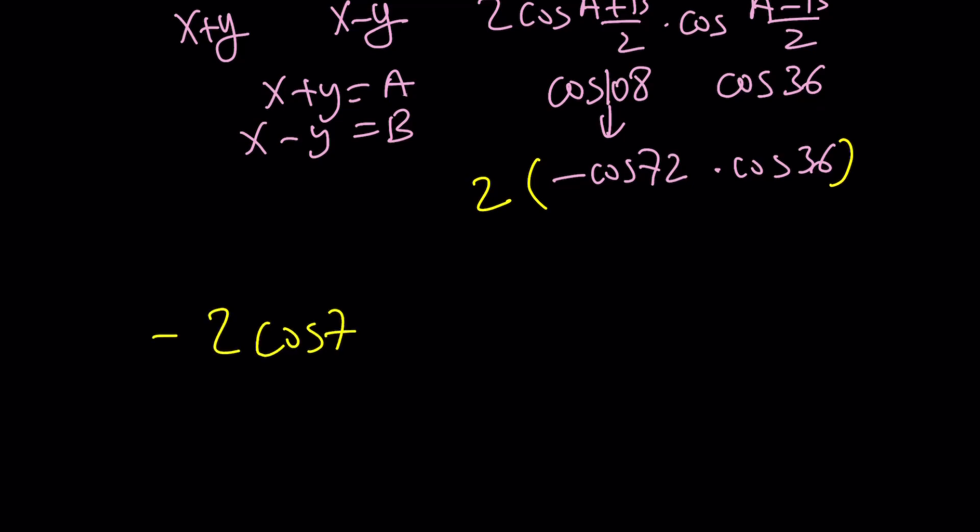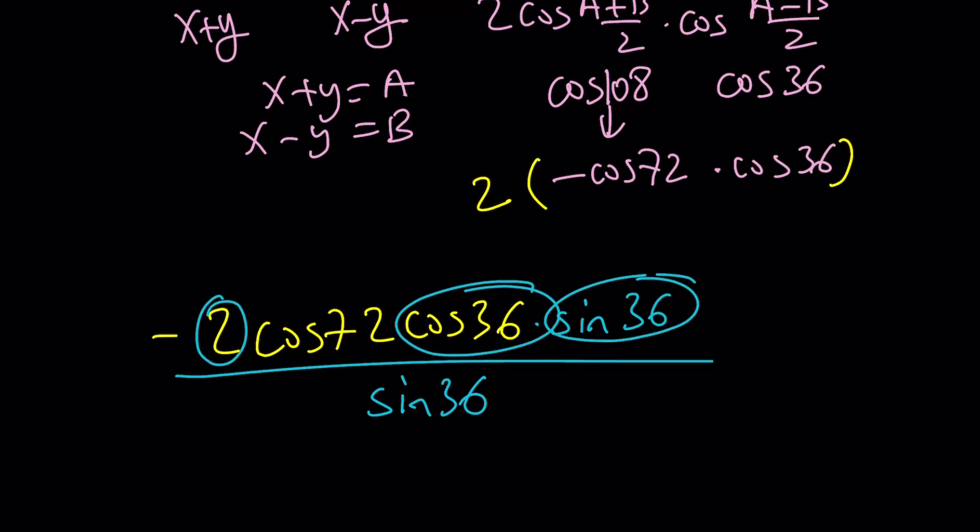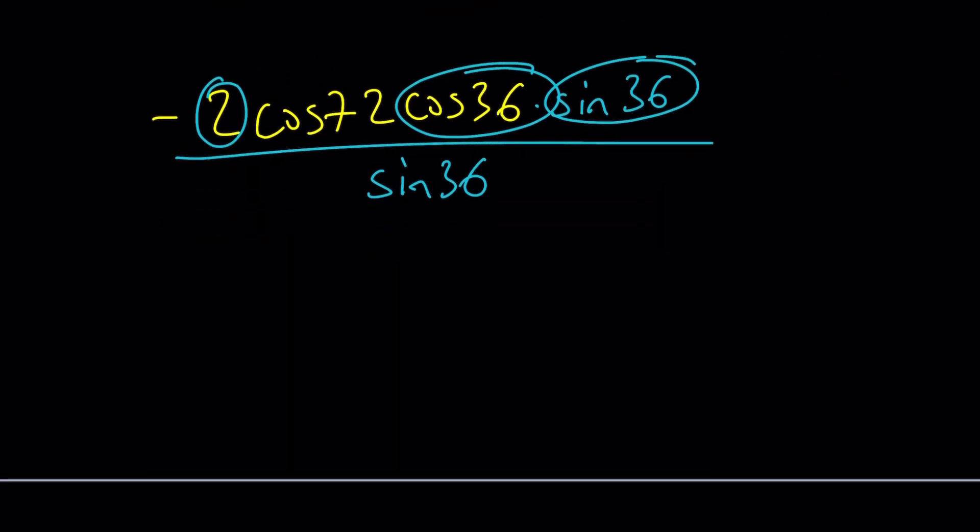Let's just take this expression. And then we can go ahead and multiply by something to turn it into a double-angle formula. So I'm going to multiply by sin 36 and divide by that. And now 2 sin 36 cos 36 is going to turn into sin 72 from the double-angle formula. So we're going to end up with negative sin 72 cos 72 divided by sin 36. And now we do need to multiply by 2.